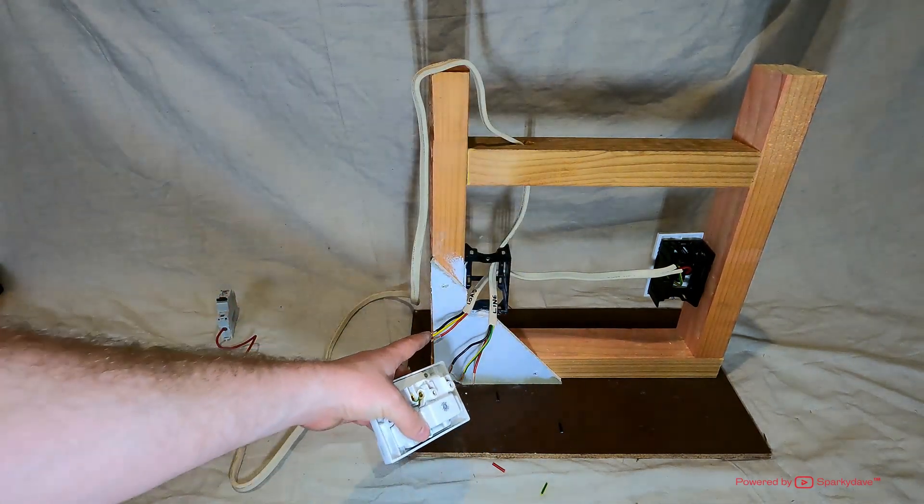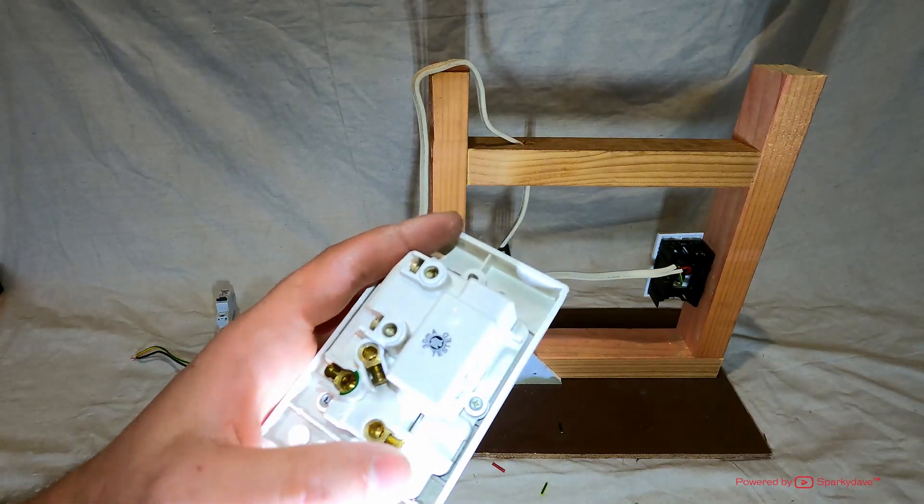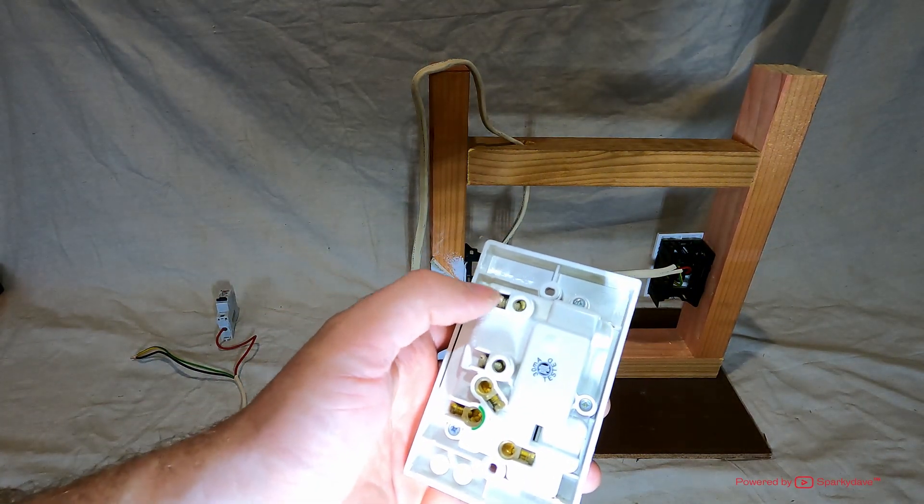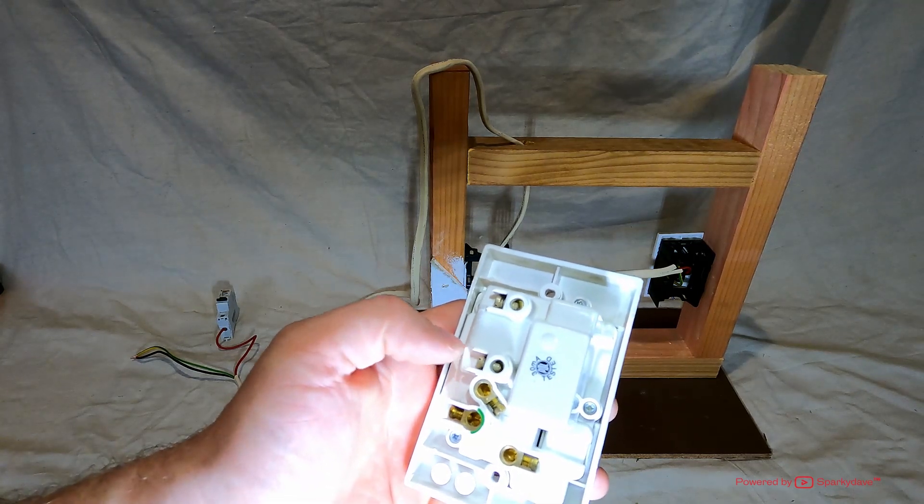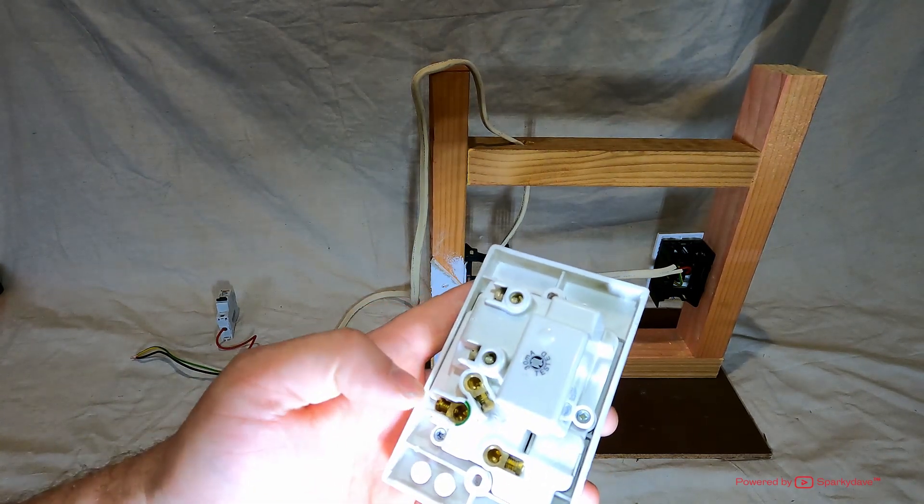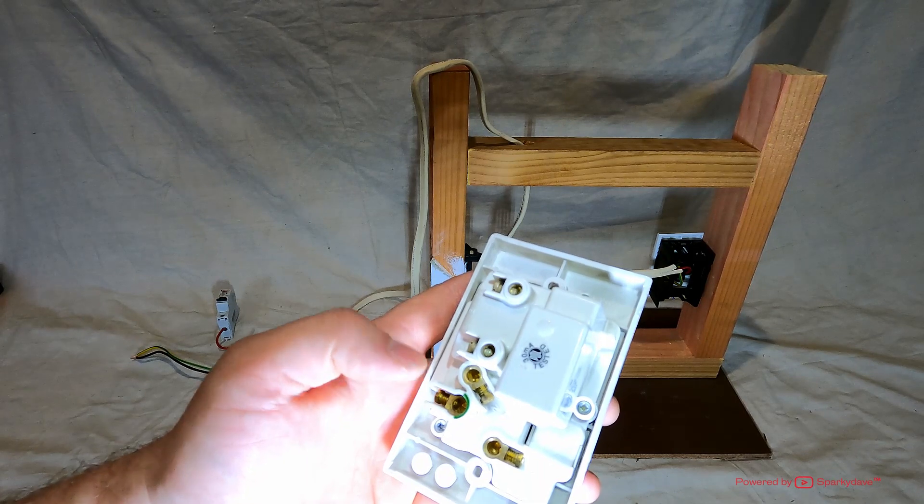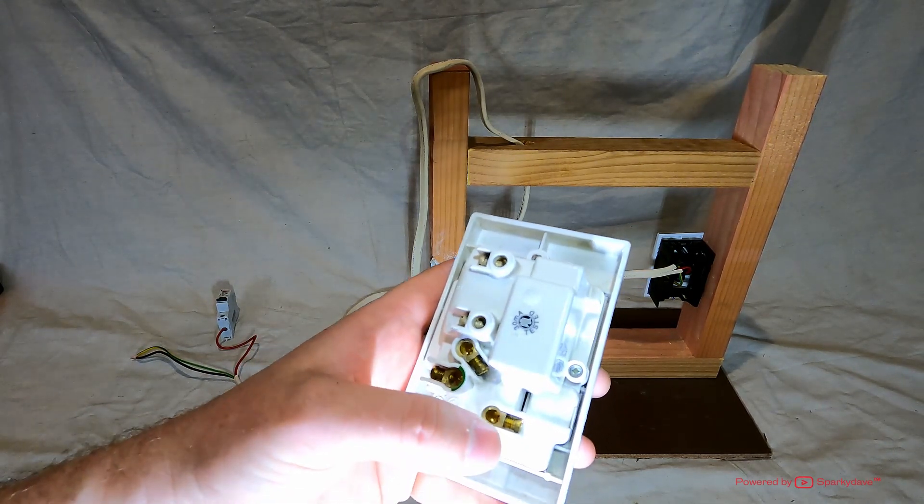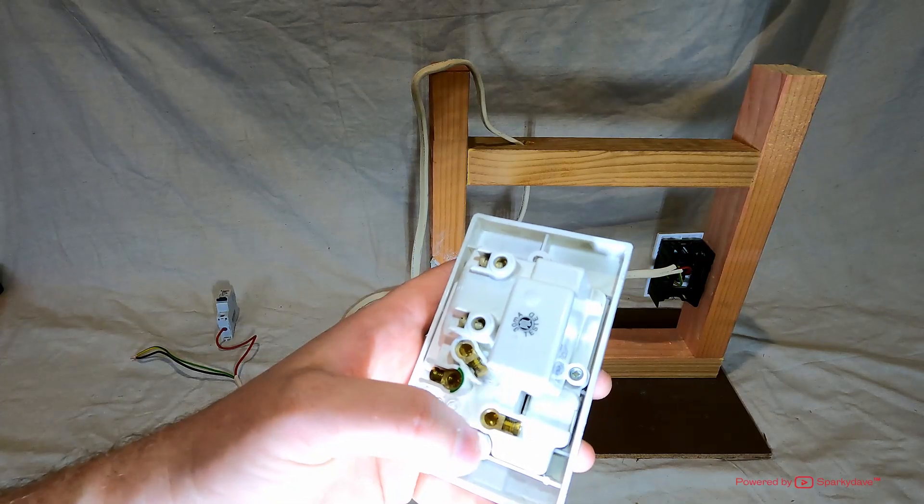So the red cable of the load side will be going into that one. Just to recap, we'll have the red cable on the line side up here, the black cable on the line side here, both green cables into here. We'll have the black cable on the load side there, and the red cable on the load side going out there.